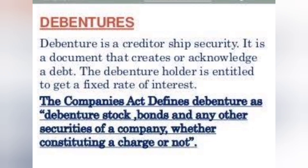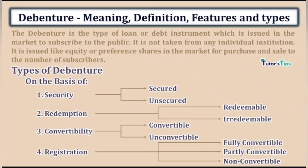Define debenture. A debenture is a creditorship security; it is a document that creates or acknowledges a debt, meaning the company has to pay interest and the holders are its creditors. The Companies Act defines a debenture as debenture stock, bonds, or any other securities of a company whether constituting a charge or not. A debenture is a type of loan or debt instrument issued in the market to the public — it is not taken from any individual institution but is issued like equity or preference shares for purchase and sale among subscribers.